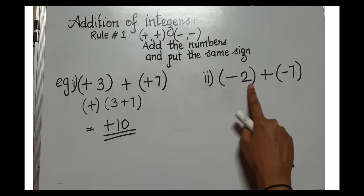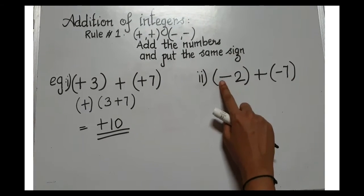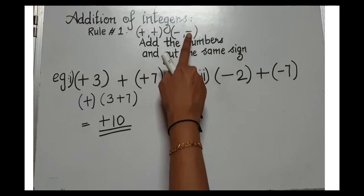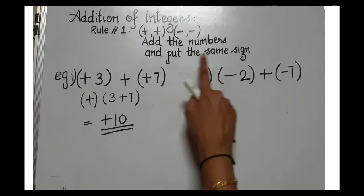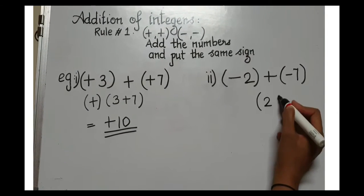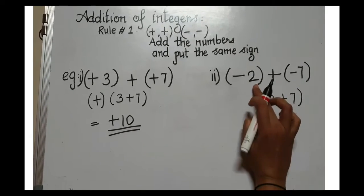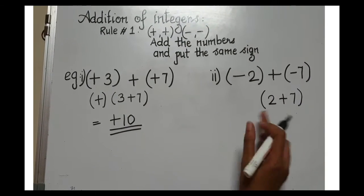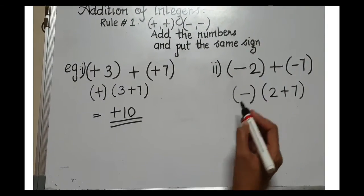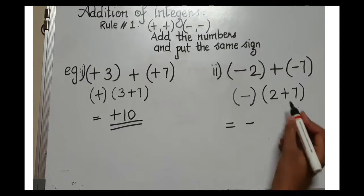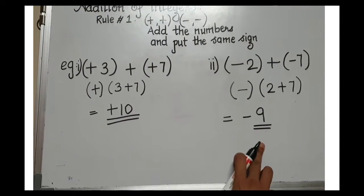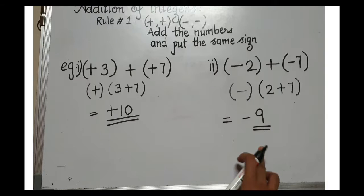Next example: minus two plus minus seven. Both are having minus signs — minus two and minus seven. Rule number one applies again. Add the numbers without looking at the signs: two plus seven. Then put the same sign. Since both are negative, I put a minus sign. Two plus seven is nine, so the answer is negative 9.